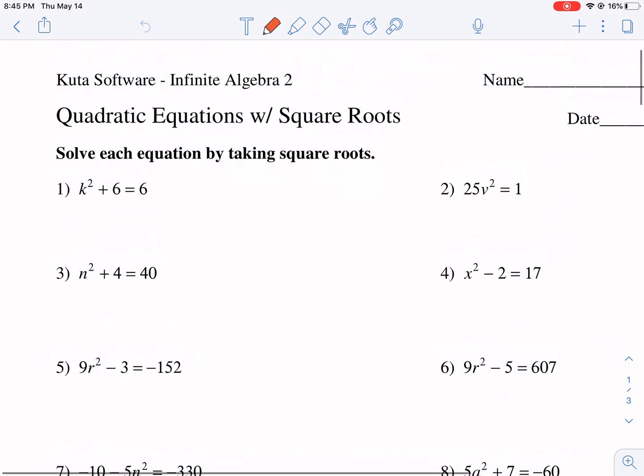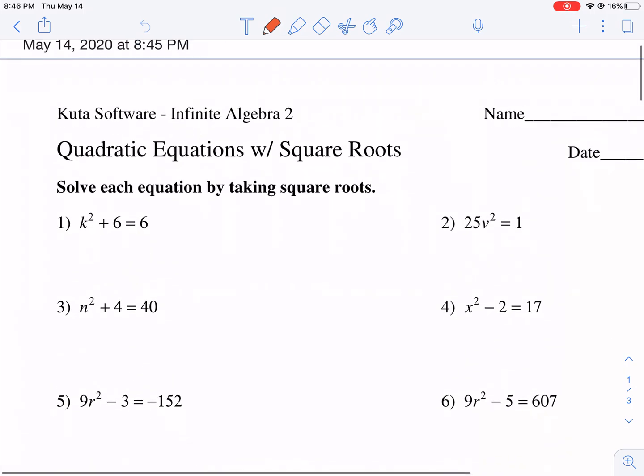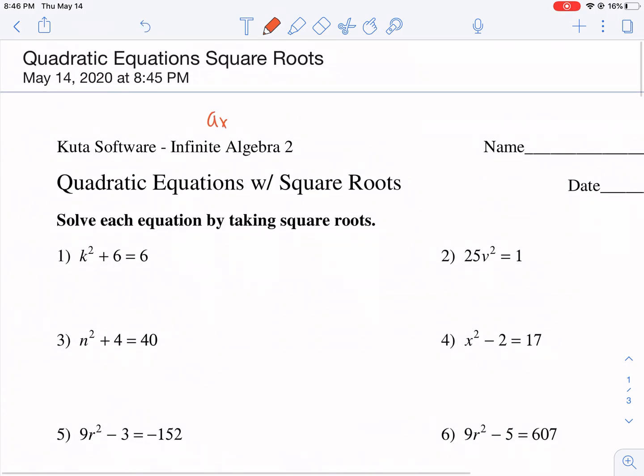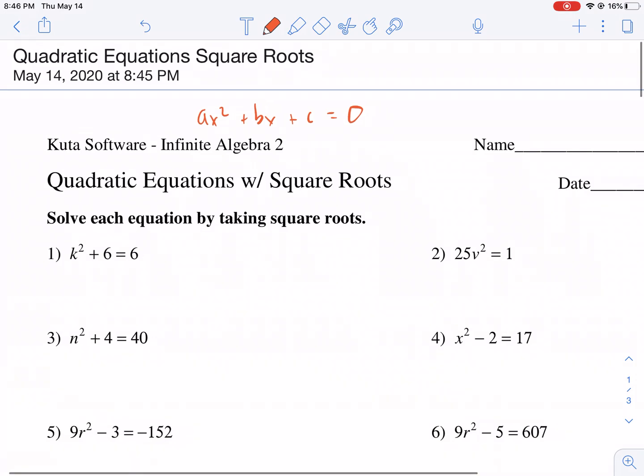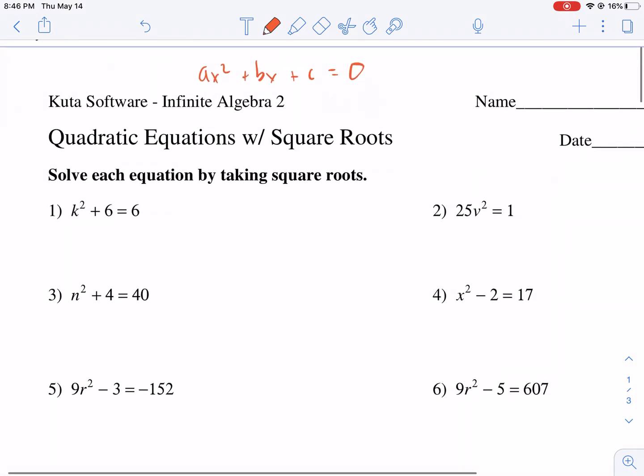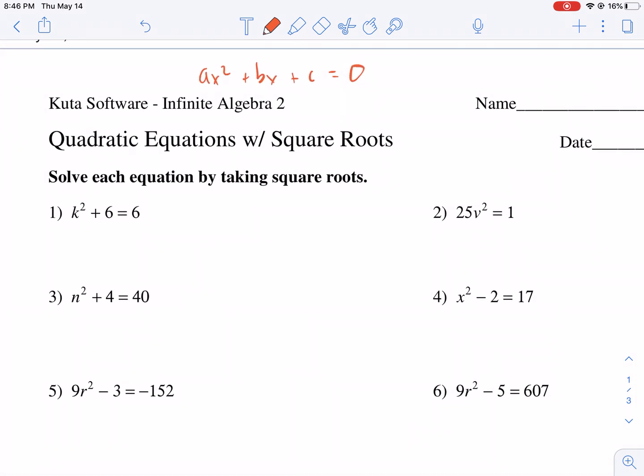So these are quadratic equations. Quadratic equations are any that are in the form of AX squared plus BX plus C, and generally they're set equal to zero. What we're going to do here is try to get the variable squared by itself. We're going to try to isolate this guy. In particular, we want the X squared all by himself.